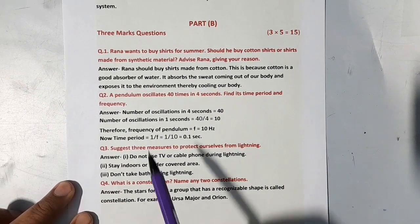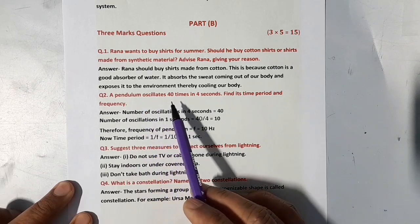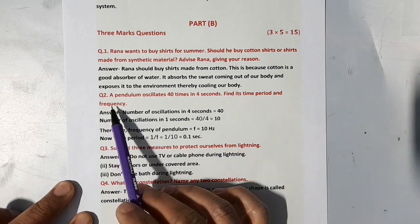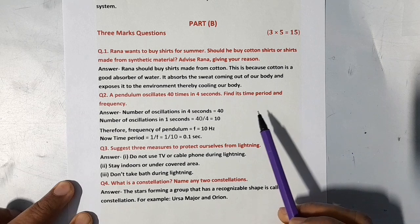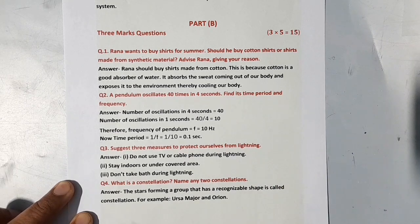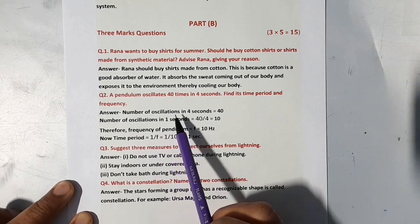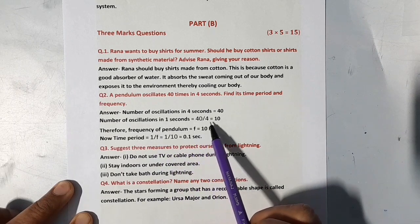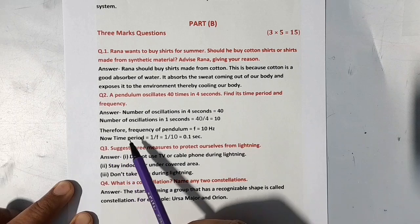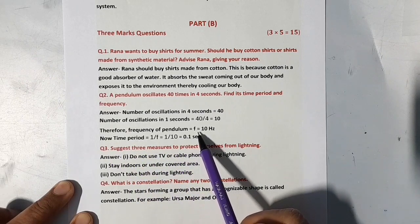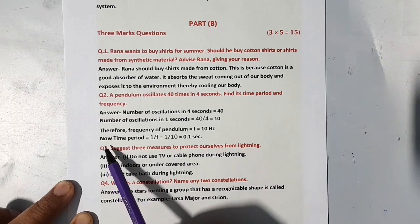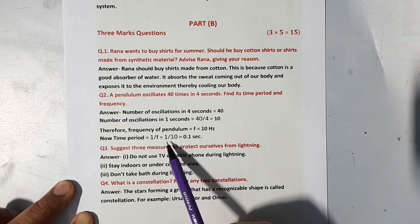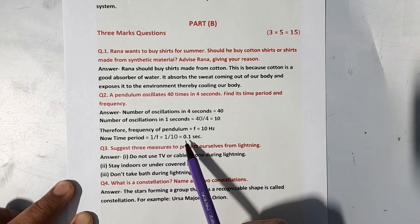Next question: A pendulum oscillates 40 times in 4 seconds. Find its time period and frequency. Number of oscillations in 4 seconds is 40, and number of oscillations in 1 second will be 40 by 4 that is 10. Therefore frequency of pendulum F is equal to 10 Hertz. Now its time period will be equal to 1 by F or 1 by 10, so time period will be 0.1 second.